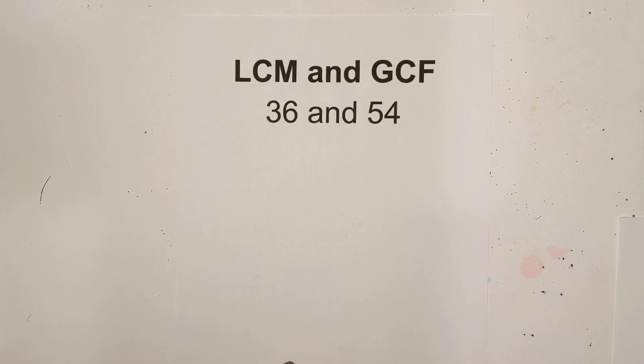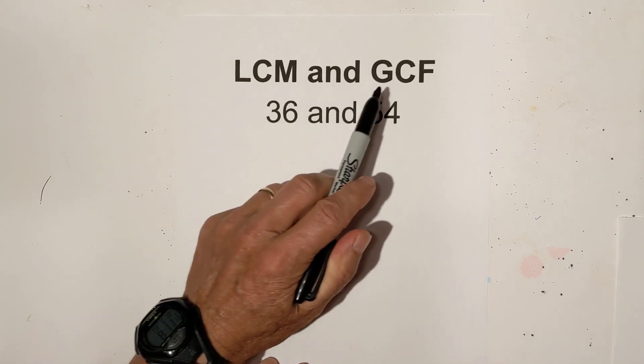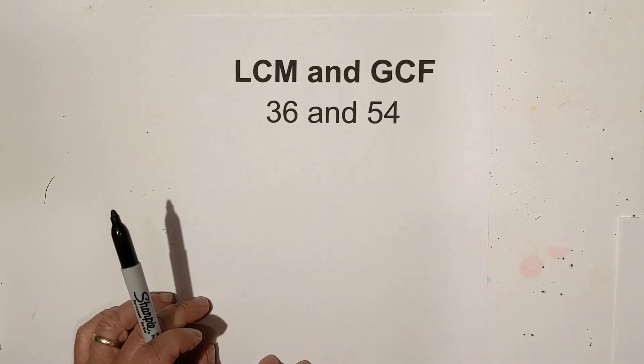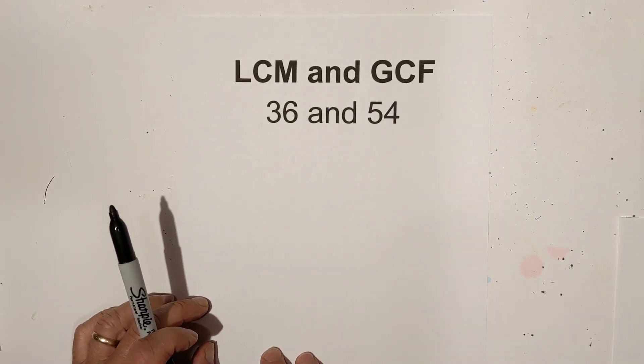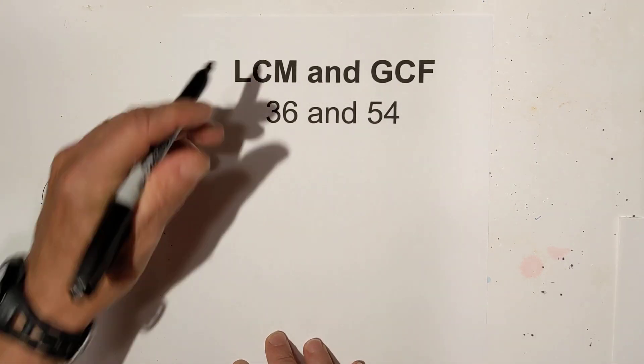Welcome to Moo Moo Math and Science. In this video, let's find the least common multiple and greatest common factor of 36 and 54. I like to use a factor tree and then a chart, and I'll show you what I do.